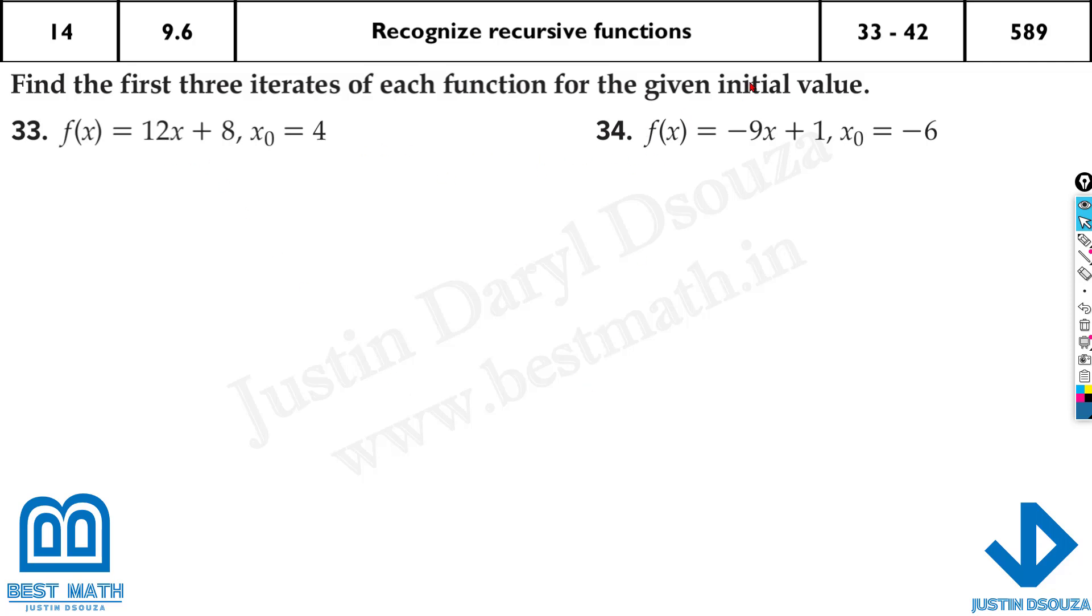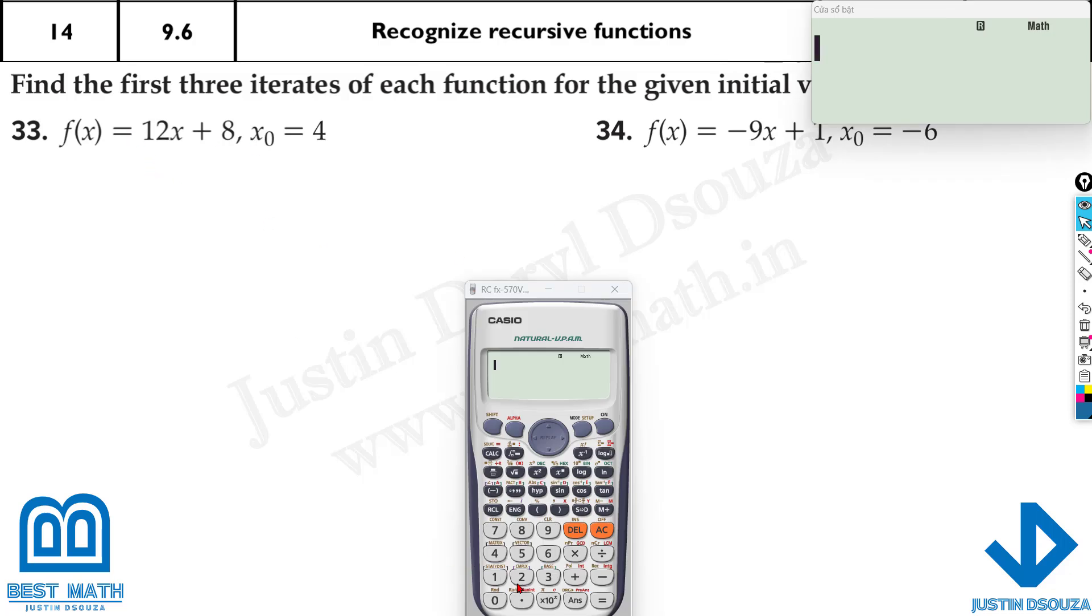Now what you need is just a calculator. I will type out this function, what is it, 12x plus 8. Now here, calculate this x value as the given function. What is the initial value? It's 4, calculate at 4, what is the answer, it's 56. That is the first iteration. If you look into the answers, that's the first answer.